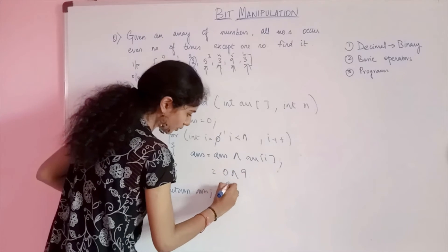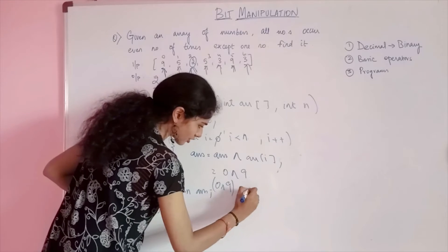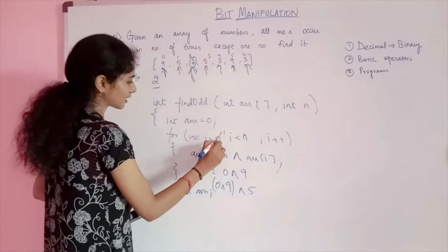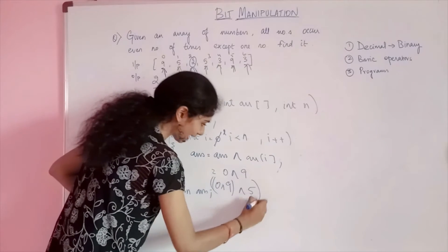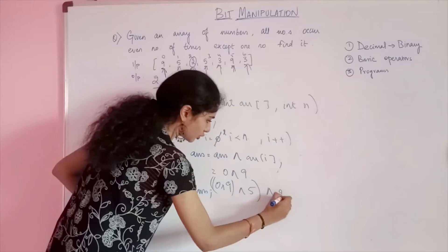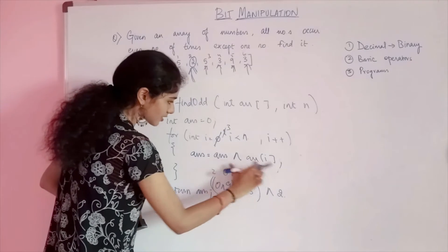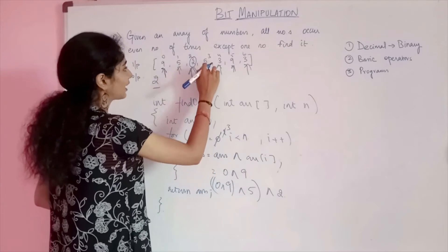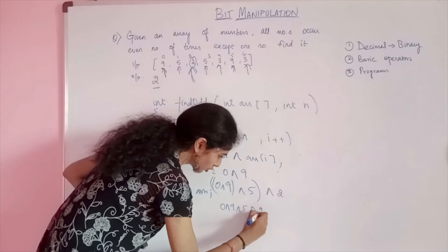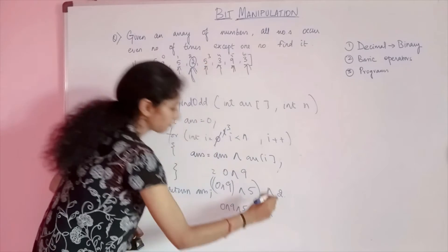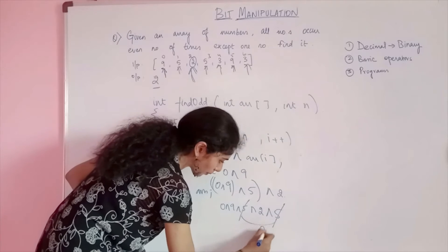During the next iteration, i will be 2. This entire thing XORed with 2. At the third iteration, answer XOR array[3]. Array of 3 is 5. So it will be 0 XOR 9 XOR 5 XOR 2 XORed with 5. This 5 and this 5 on XORing will amount to 0. We will be left with 0 XOR 9 XOR 2.